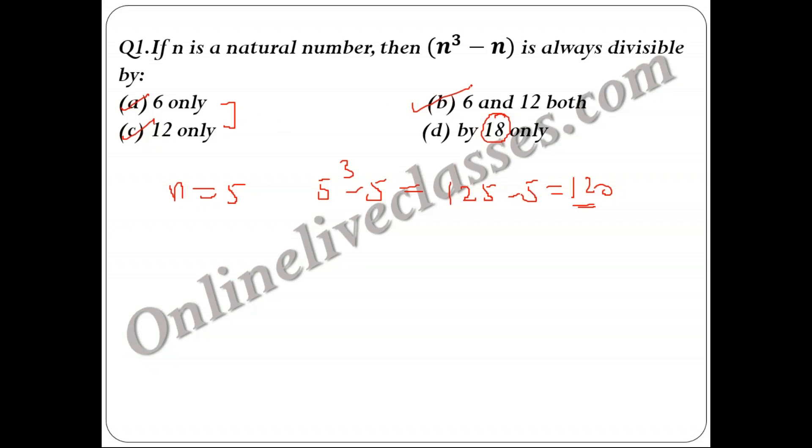Hence you can see 120 is divisible by both 6 and 12. Hence my answer should be option B: 6 and 12 both. If you still have doubt, you can change the number and put n = 6. So this would give us 6³ - 6, that is 216 - 6, so the value becomes 210.